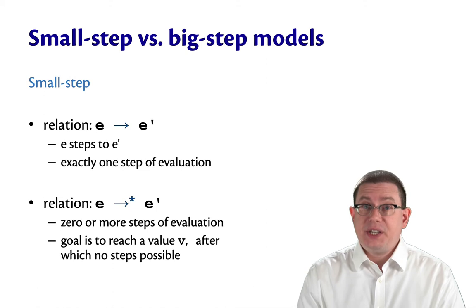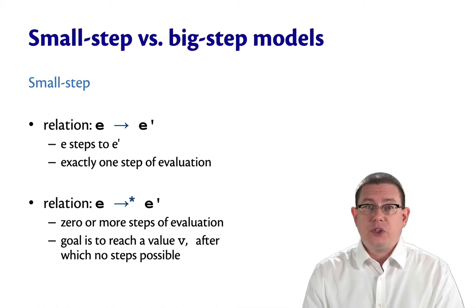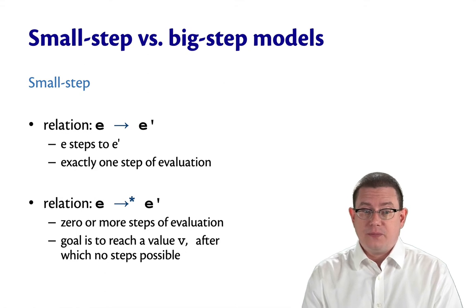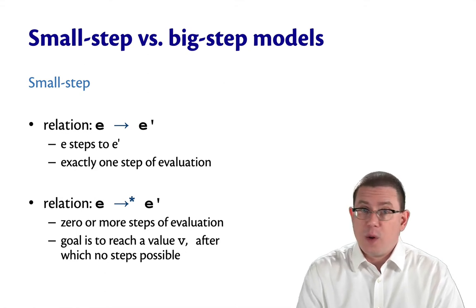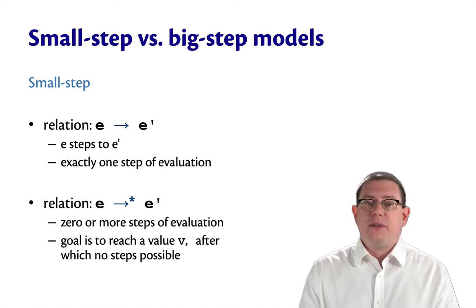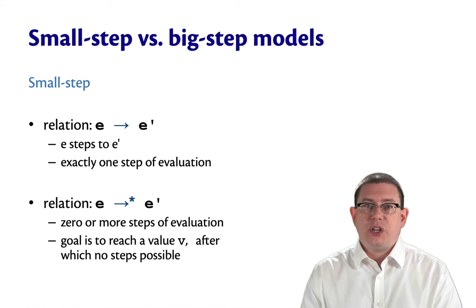We also had a multi-step relation written right arrow star. That's just the reflexive transitive closure of the single step relation. And so that means zero or more steps of evaluation. Our goal, of course, with this was eventually to reach a value V, after which no steps were possible.